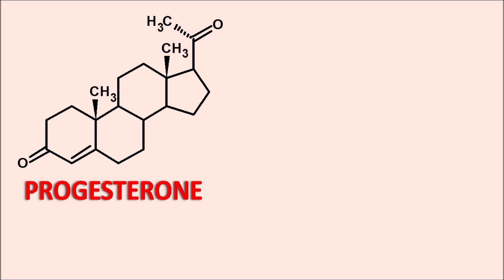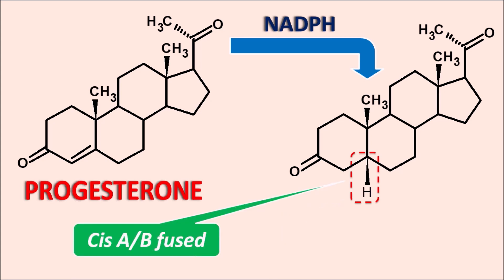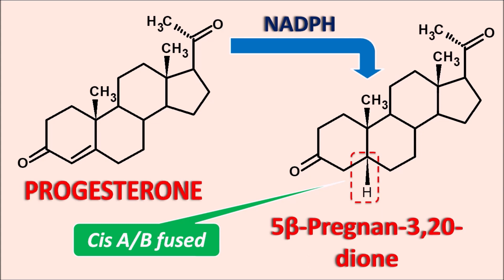The first step in this process is reduction by NADPH, where the double bond at the fourth and fifth positions is saturated. In the resulting intermediate, the hydrogen at the fifth position is attached by solid wedge, and the methyl group at the other bridgehead is also attached by solid wedge, indicating that rings A and B are cis-fused. During this reduction, the rings are formed as cis-fused. This intermediate, having beta configuration at the fifth position and ketone groups at the third and 20th positions, is 5-beta-pregnane-3,20-dione.